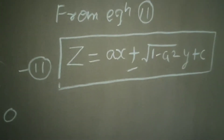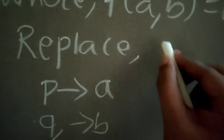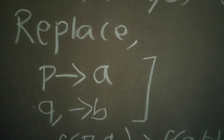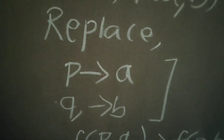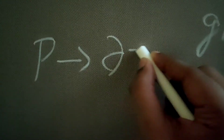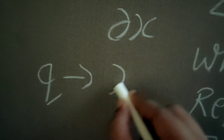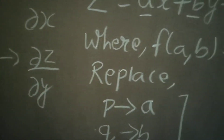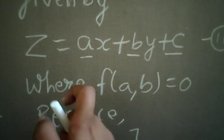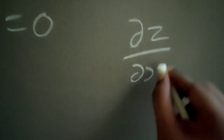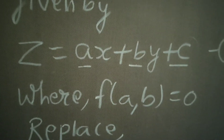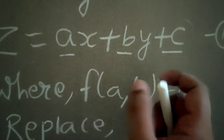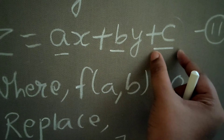One thing students ask is: why do we replace p by a and q by b? And another question is: what are p and q? You should already know from convention that p = ∂z/∂x and q = ∂z/∂y. This will help you understand the substitution. If you differentiate equation two with respect to x, you get ∂z/∂x — and since y terms and constants are treated as constant in partial differentiation with respect to x.